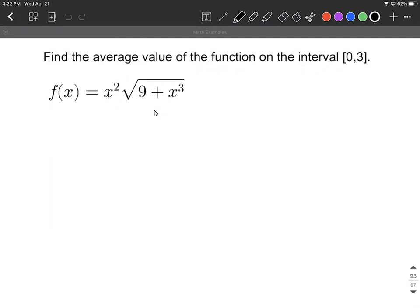The setup on this is out in front we always want to set up 1 over, we're going to subtract these endpoints of our interval. Then we're going to integrate between 0 and 3 for this function x squared multiplied by the square root of 9 plus x cubed, and this will be with respect to x because our bounds are based on x.